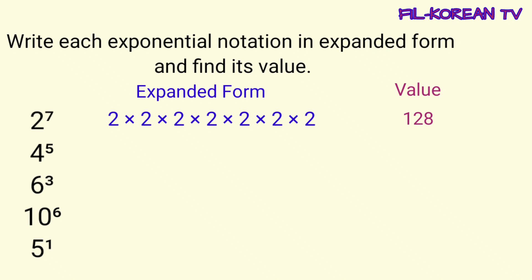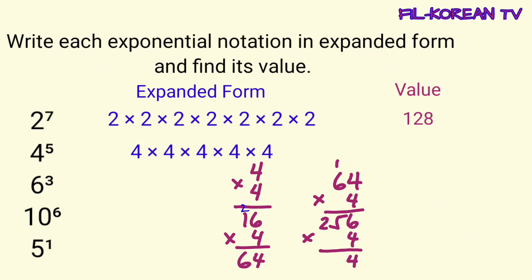Number 2, 4 to the 5th power. Ibig sabihin, imumultiply natin ang 4 ng 5 ulit sa kanyang sarili. So, ang expanded form ay 4 times 4 times 4 times 4 times 4. At para makuha natin ang value, imultiply lang natin itong expanded form. Kapag imultiply natin ito, ang answer ay 1024.